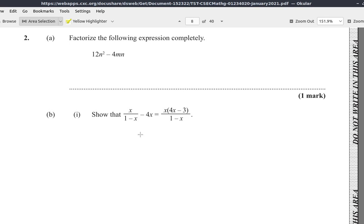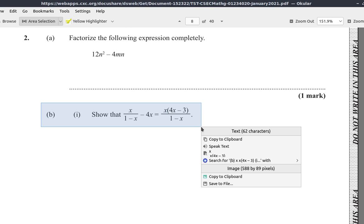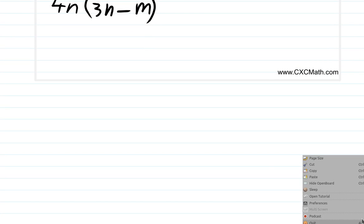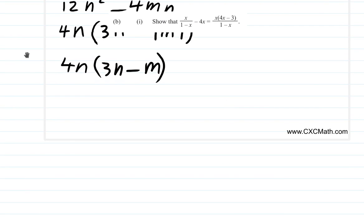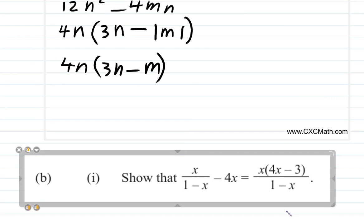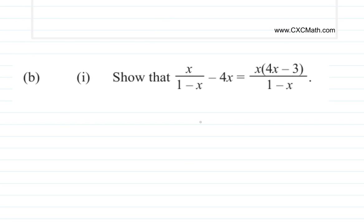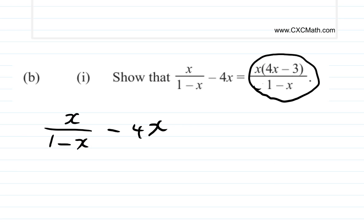Part B says: show that x divided by (1 minus x) minus 4x is equal to the expression on the right. So let's copy it and paste it over here. Let's bring it down and expand it. So what you're going to do now is have x divided by (1 minus x) minus 4x, and you're going to show that it is equal to this. I want you to pause the video and do that.